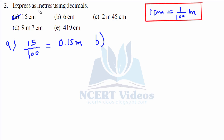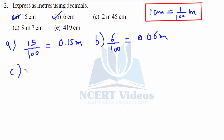For part b, 6 over 100 meters gives you 0.06 meters. For part c, 2 meters plus 45 centimeters — we will not disturb the meters, only 45 centimeters has to be converted — that gives you 2.45 meters.